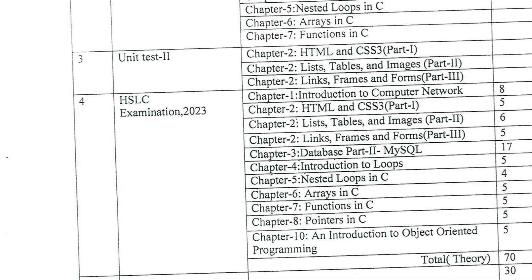In the marks distribution: HTML carries 5 marks, HTML Lists carry 6 marks, Frames carry 5 marks, and Database (MySQL) carries 17 marks. If we consider HTML as a whole, it totals 16 marks (5 + 5 + 6), and MySQL is 17 marks.